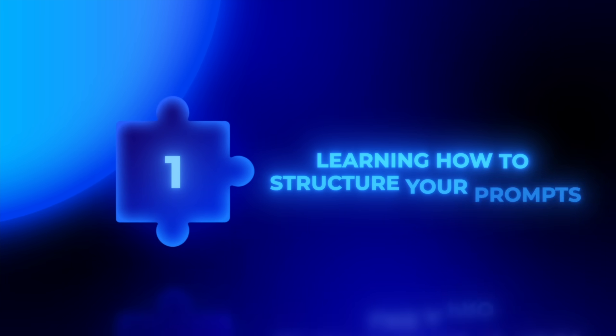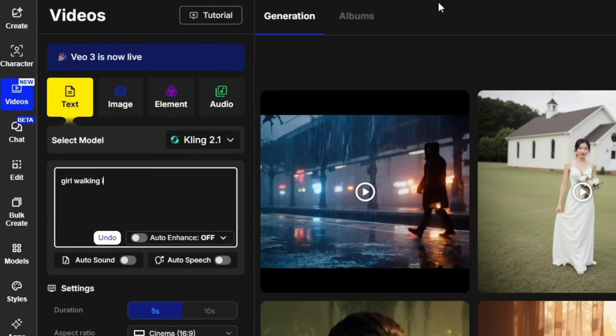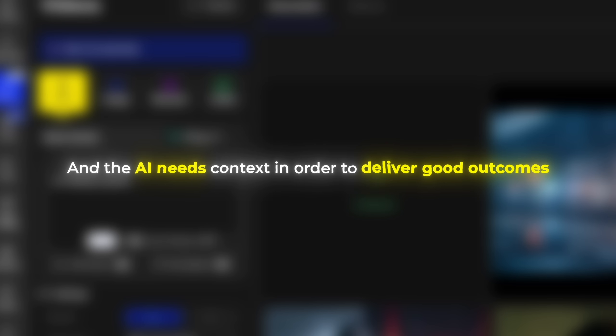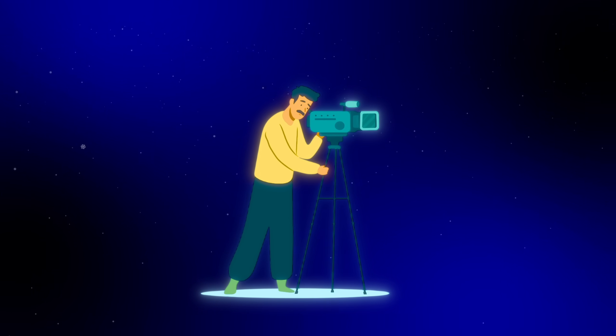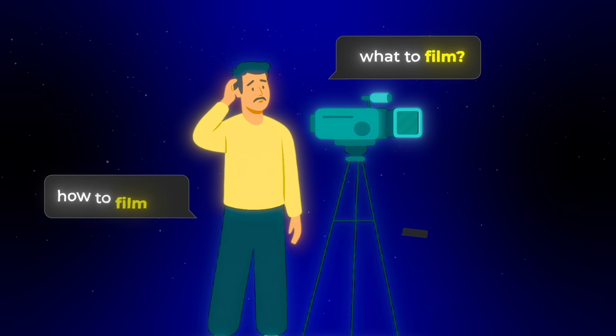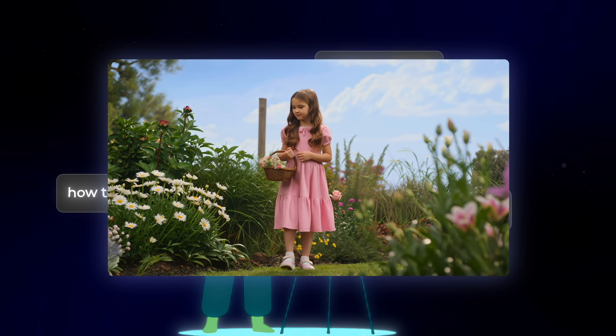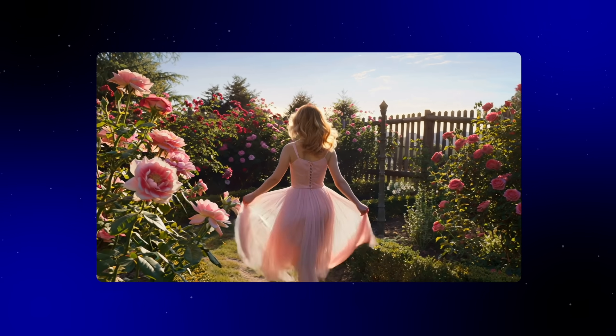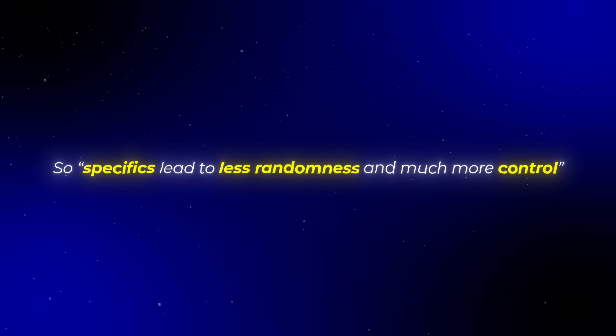Let's get into the first tip, and this one is probably the most important of all — learning how to structure your prompts. The reason it's so important is because Kling doesn't guess well. If you give it vague prompts, you'll never get the exact results you had in mind. Think of it this way: the AI is like a cameraman. If you don't tell the cameraman what to film, how to film it, and where to film it, you'll end up with random footage. But if you give clear, specific directions, you get shots that look exactly the way you imagined. Specifics lead to less randomness and much more control.